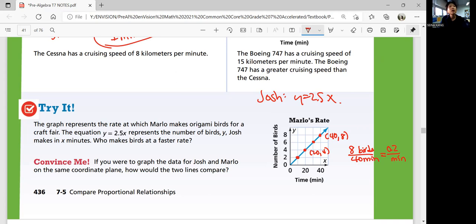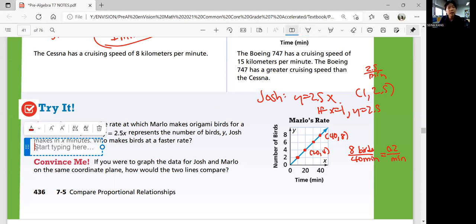So how do you know? You can plug in, or if you don't know what the slope means, you can plug in some values for x and figure it out. If x is 1 in one minute, it means y is equal to 2.5 because you multiply 2.5 by 1. So that's your point, 1 comma 2.5. That means he makes 2.5 origamis per minute. So Josh is making at a much faster rate. Unit rate helps you compare the rates faster. Josh makes origami birds at a faster rate is the answer.